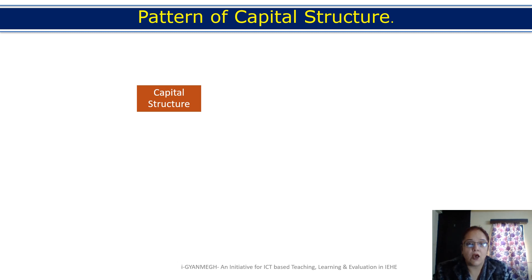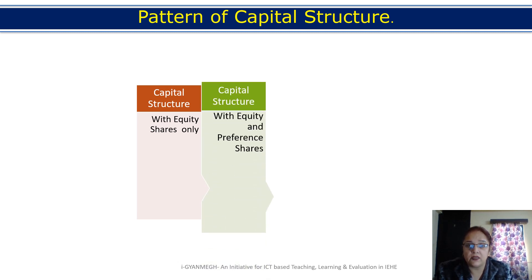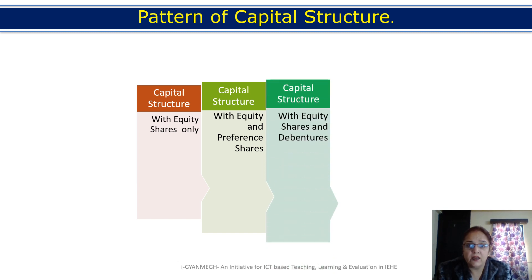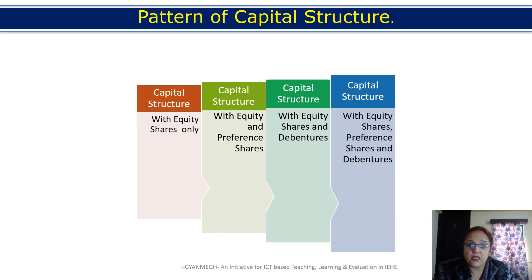Now let us look at the patterns of capital structure. The first pattern is capital structure with only equity shares. The second pattern is capital structure with equity shares and debentures. The third combination includes equity shares, preference shares, and debentures.